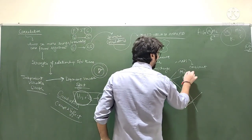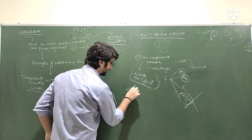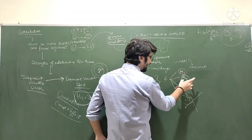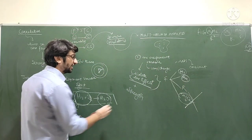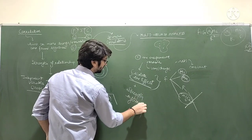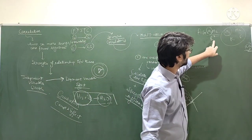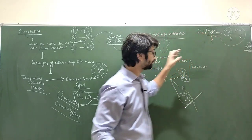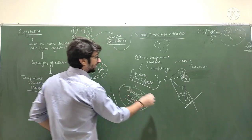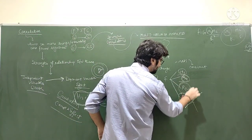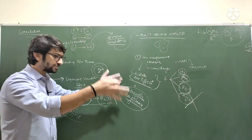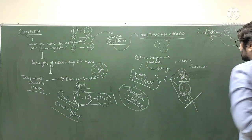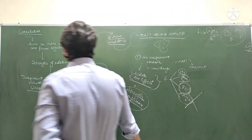Through multivariate analysis, the strength of each variable's relationship also becomes clear — one variable may change the dependent variable more, another less. For instance, r (distance) has a squared impact on force, while m₁ and m₂ have only a single impact. This also becomes clear: keeping all others constant and varying r, then tabulating how force changes, shows that r's impact is greater. That is multivariate analysis.